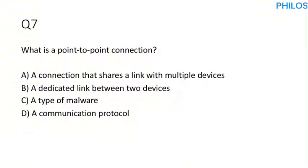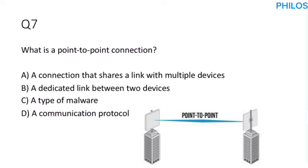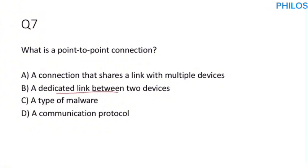Question seven: What is a point-to-point connection? A point-to-point connection (P2P) directly connects two devices with a dedicated communication link. The correct answer is option B: a dedicated link between two devices. We call it a point-to-point connection, P2P.